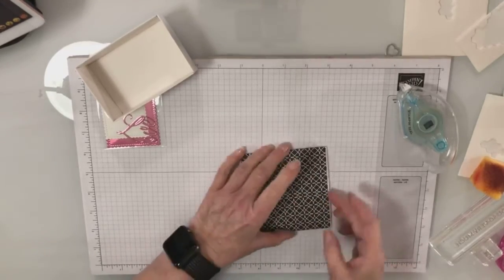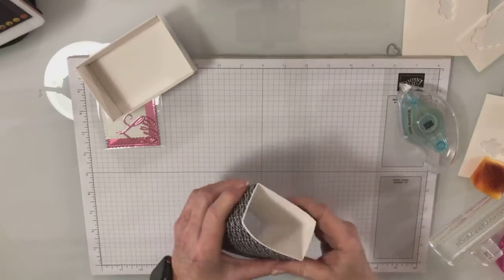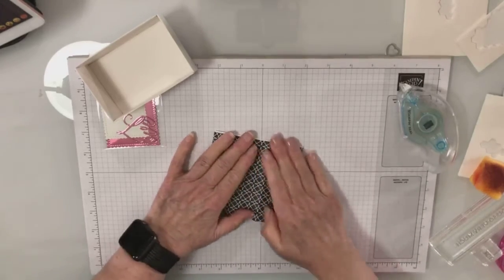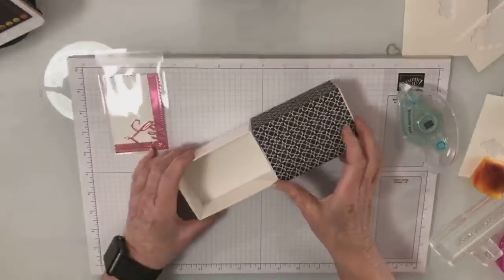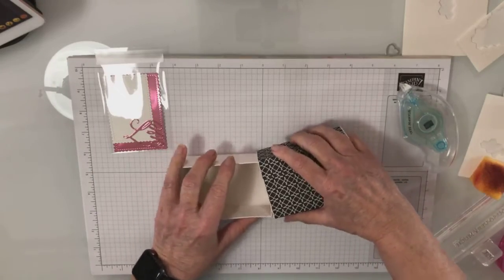There we are, super simple. Now I'm just going to crease this like it's supposed to be and slide my box inside just like that. Isn't that cute? Very simple.